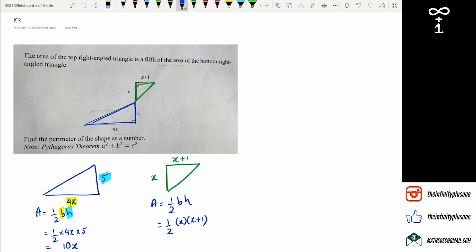Now, it says that the green triangle is actually a fifth of the blue triangle. So I need to figure out what is one-fifth of the area of the blue triangle. The blue triangle's area is 10x. So one-fifth of 10x equals 2x. How do I get that? Well, basically 1 over 5 times 10x. 5 and 10 divided by 5 is 2. So that's going to give me 2x.